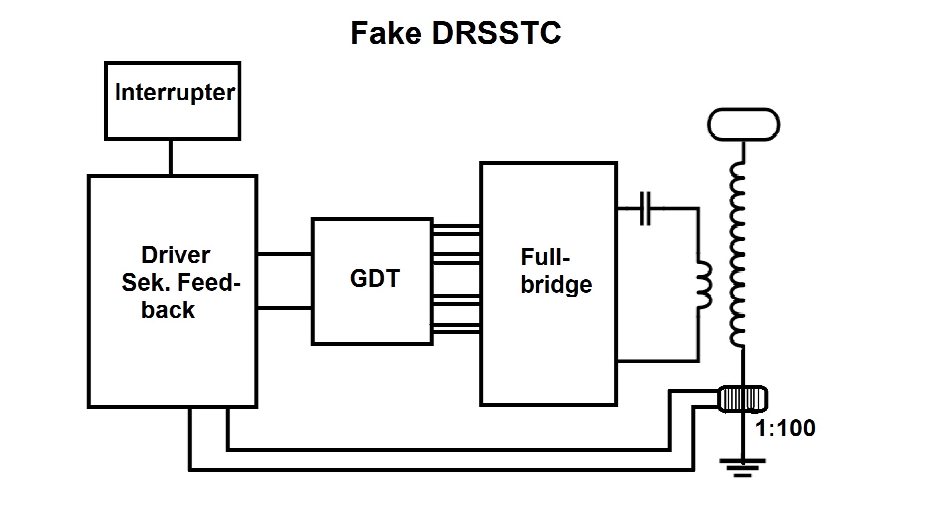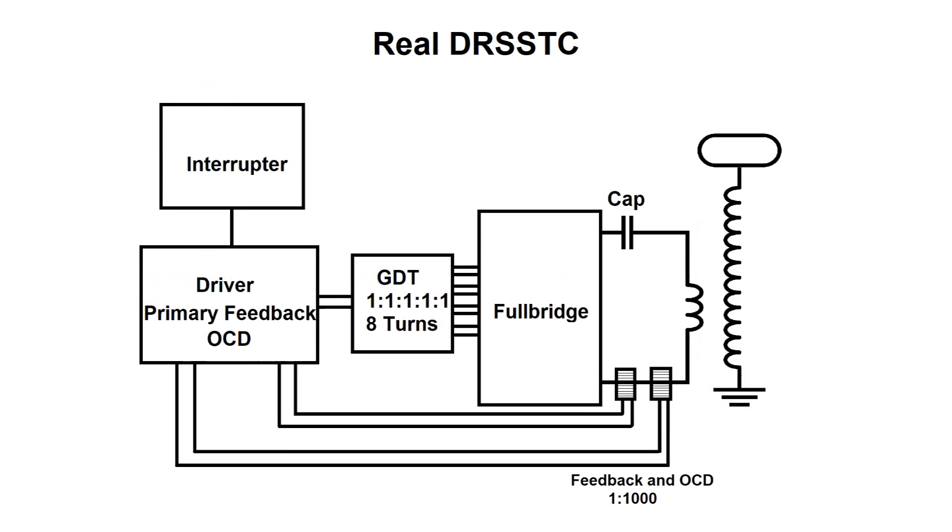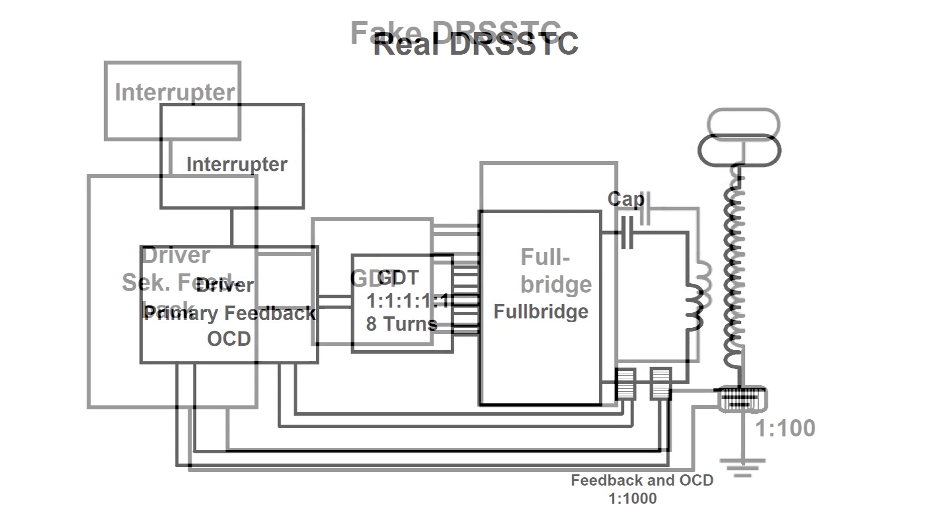One important thing I have to tell you. Just because we can add a primary capacitor in the circuit we don't have a real DR-SSTC. A real DR-SSTC always has primary feedback and oscillates without a secondary coil. This does not work with our circuit because we get the feedback signal from the secondary coil.